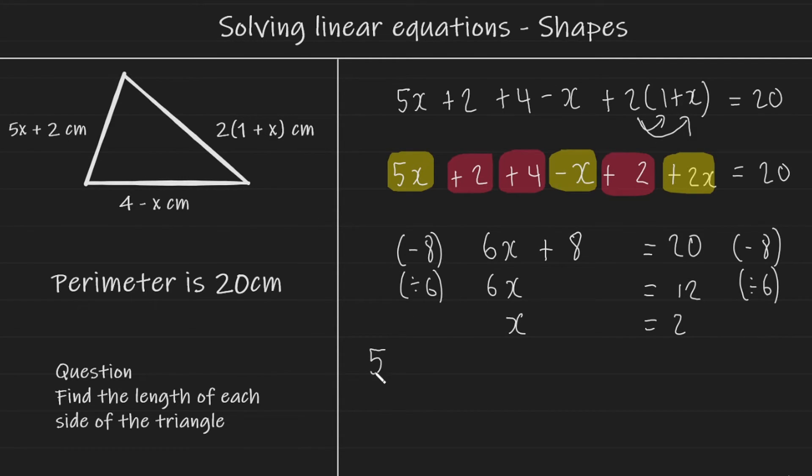I'm going to write out 5 multiplied by x. But instead of x, I'm actually going to write down the number it's equal to, which is 2. So 5 times 2 plus 2, and this gives us 12. So the length of the left hand side of the triangle is 12 centimeters.